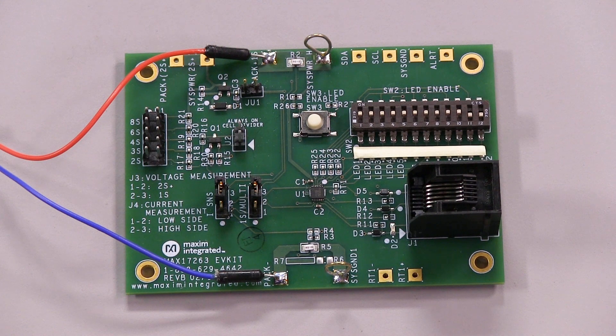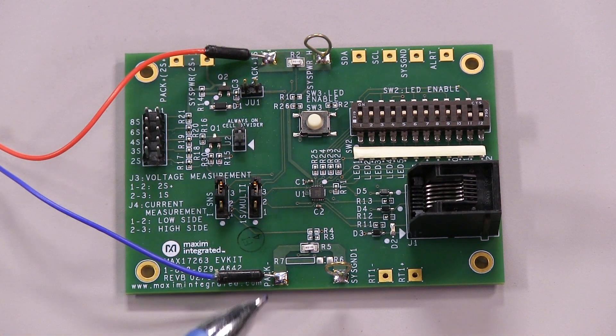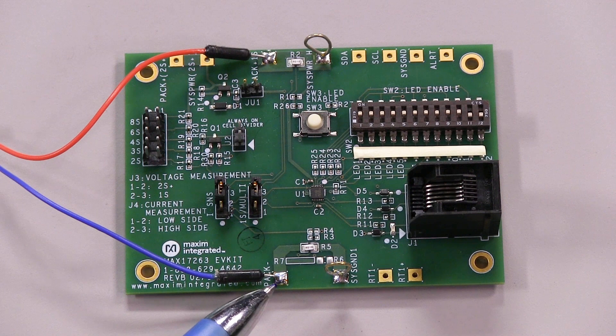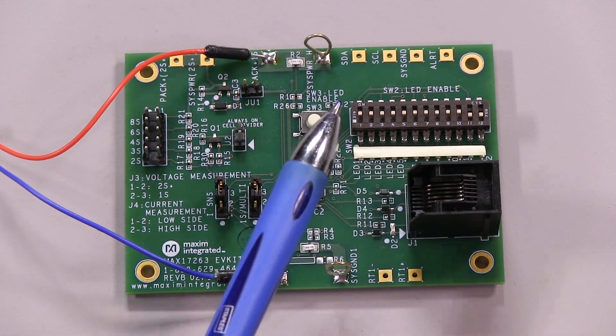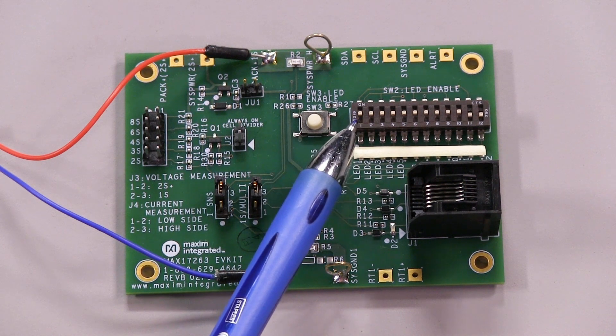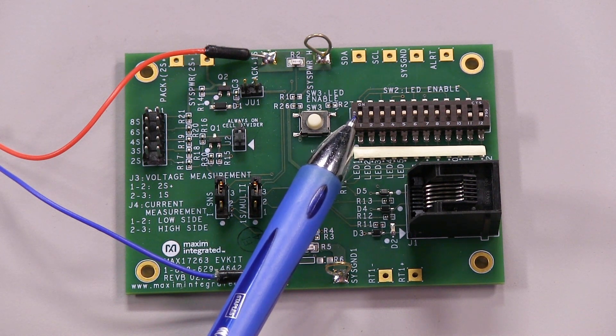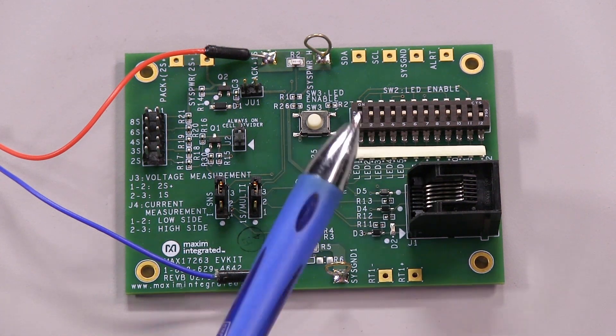I have a single cell battery, so I'll connect it across the PAC plus 1S and PAC minus terminals on the board. But before I connect the battery, I need to set the number of LEDs to use by flipping these switches over here. I want to use 10 LEDs, so I'll flip the first 10 switches to the on position.